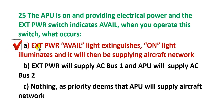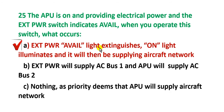This is the correct answer: external power available light extinguished and the on light illuminates, and it will then be supplying the aircraft network. What is the philosophy of the priority here?